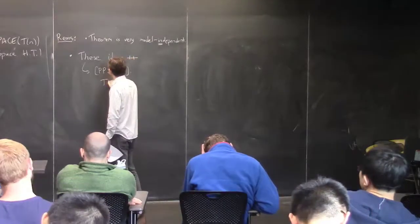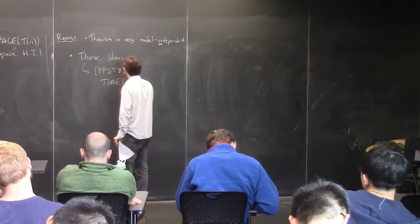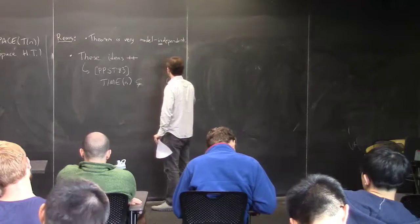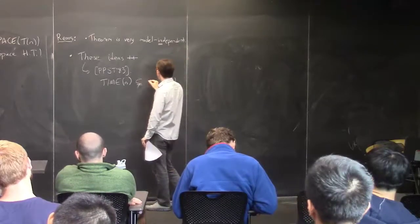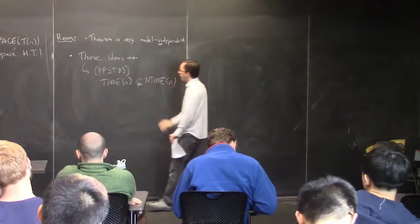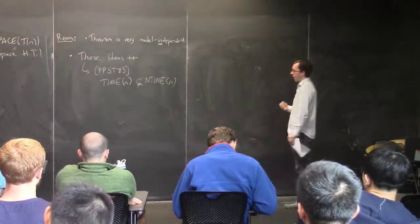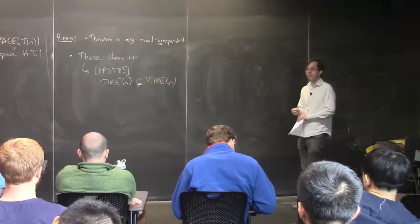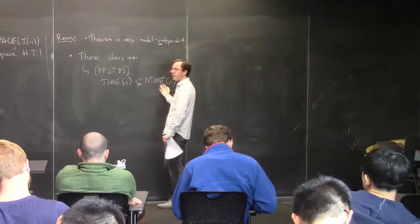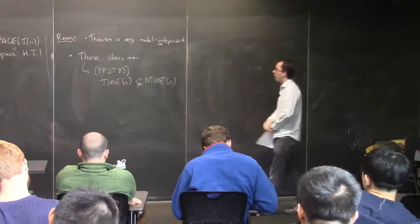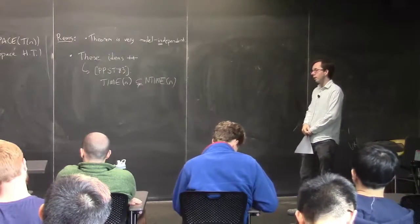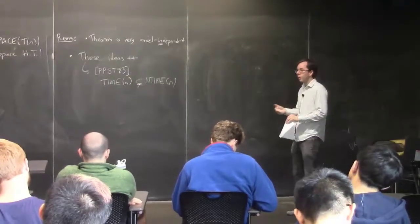They showed that TIME(n) is strictly contained in NTIME(n) — non-deterministic time. It's trivial that linear time is a subset of non-deterministic linear time, and they showed this is a strict separation. Non-deterministic linear time is strictly more powerful than deterministic linear time, and people thought that was really cool — and it is really cool.